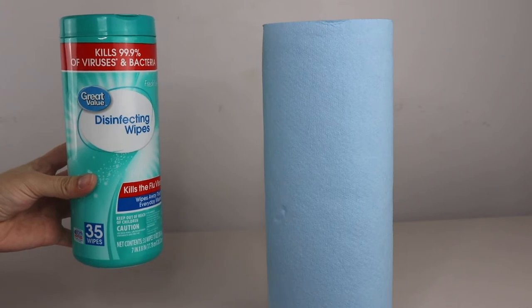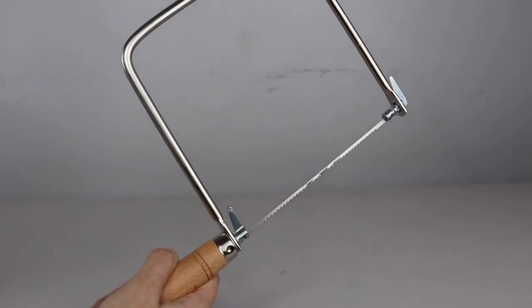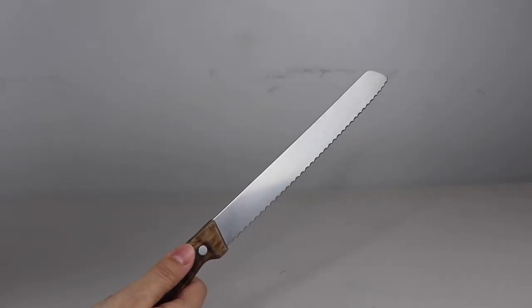First, start by cutting your paper towel to the length of your container. I cut this using a small coping saw but a sharp serrated knife will also do the trick.